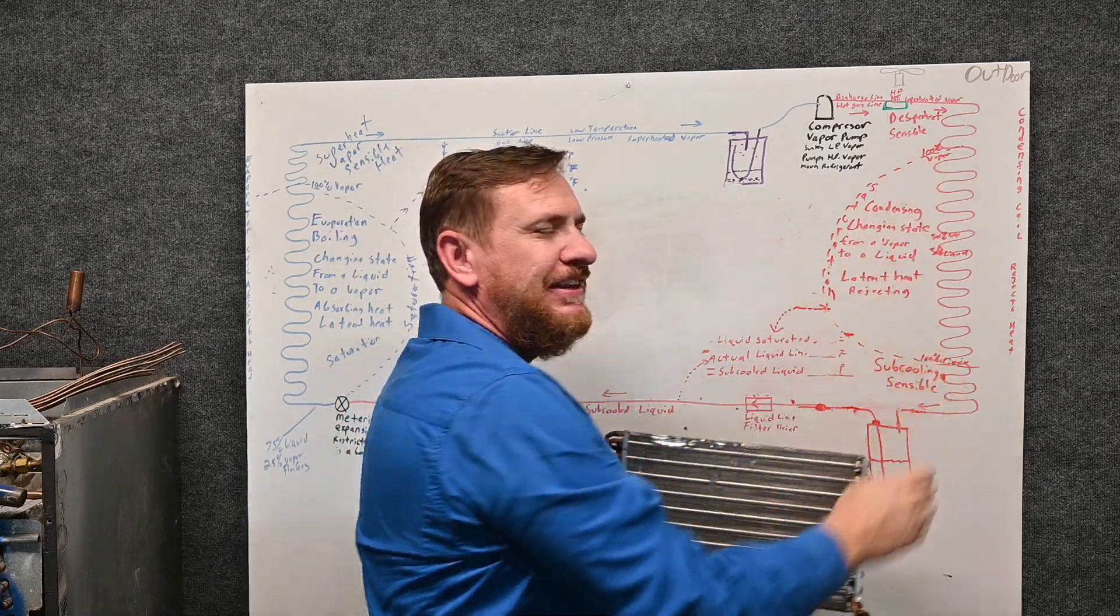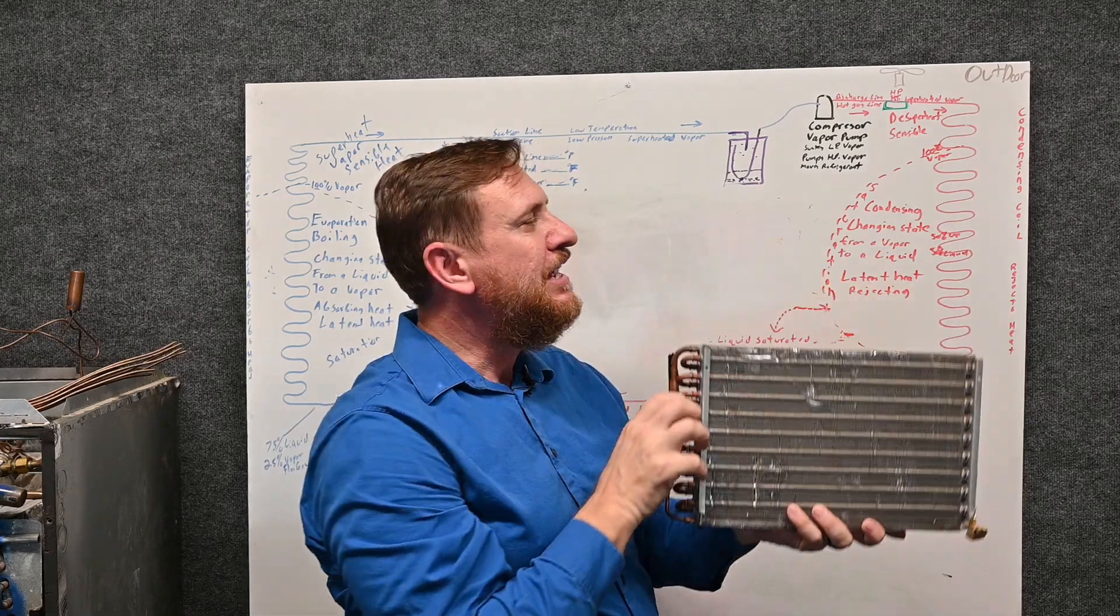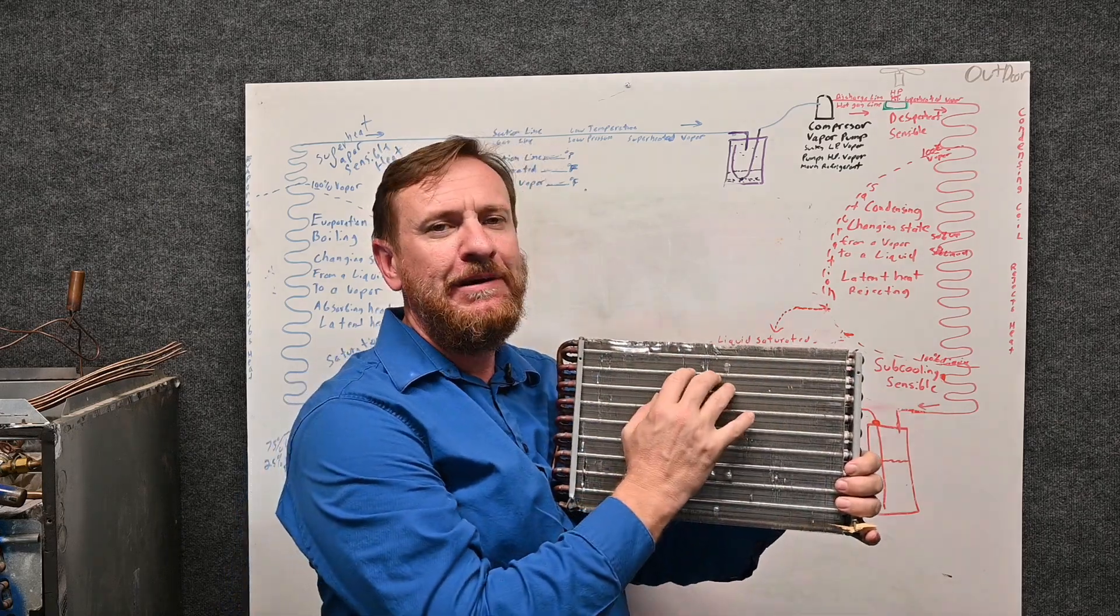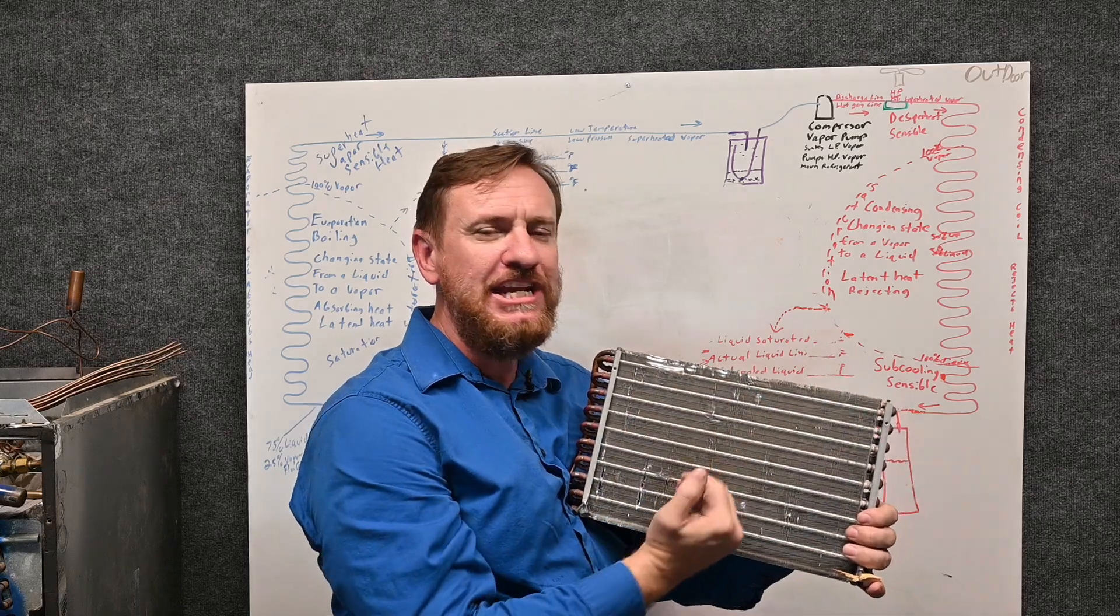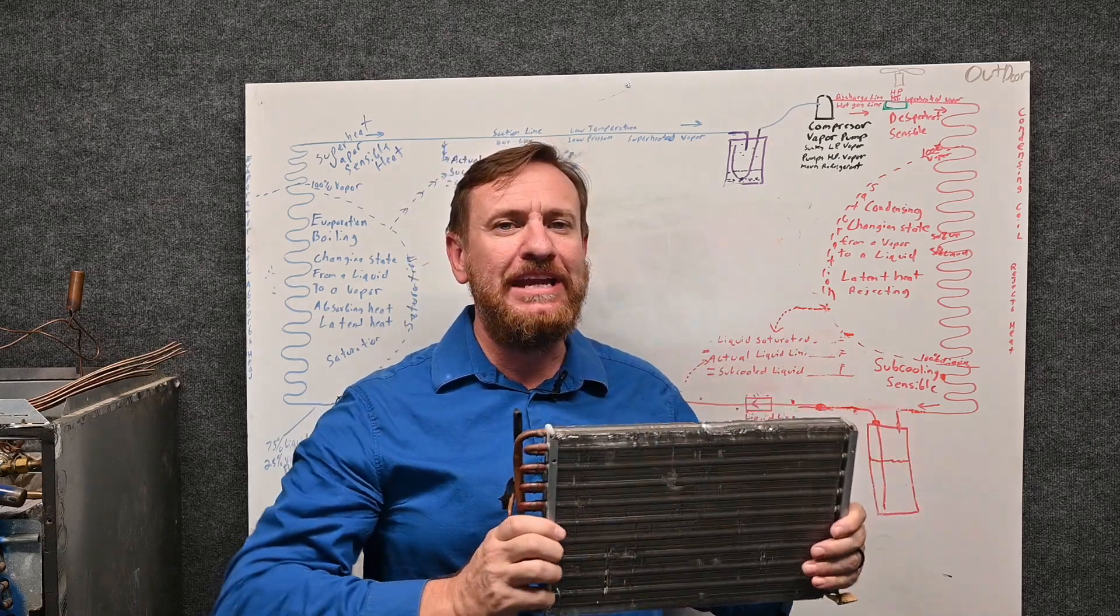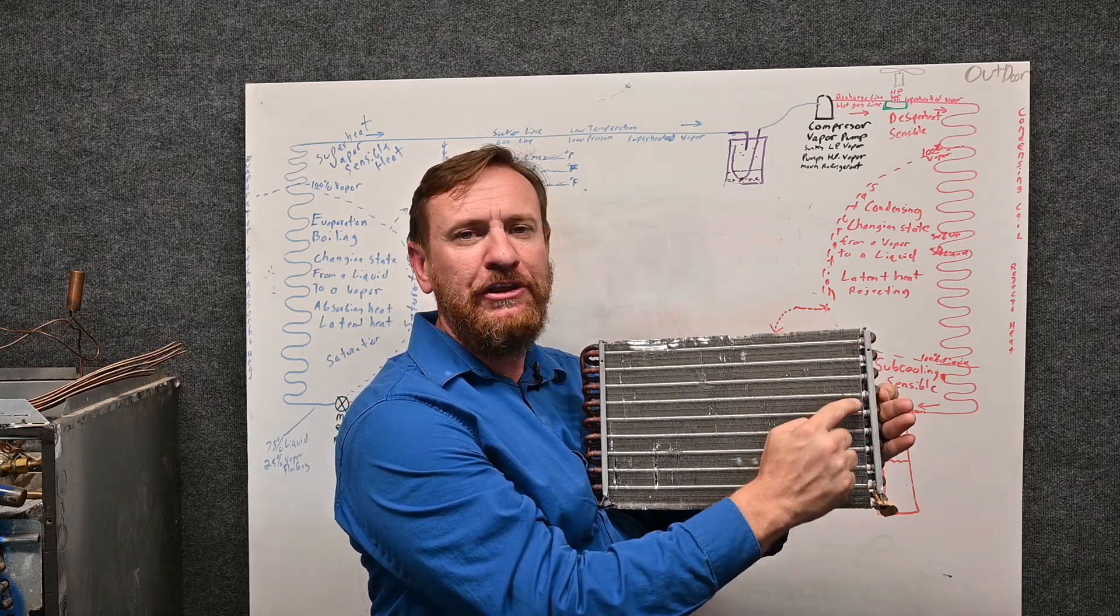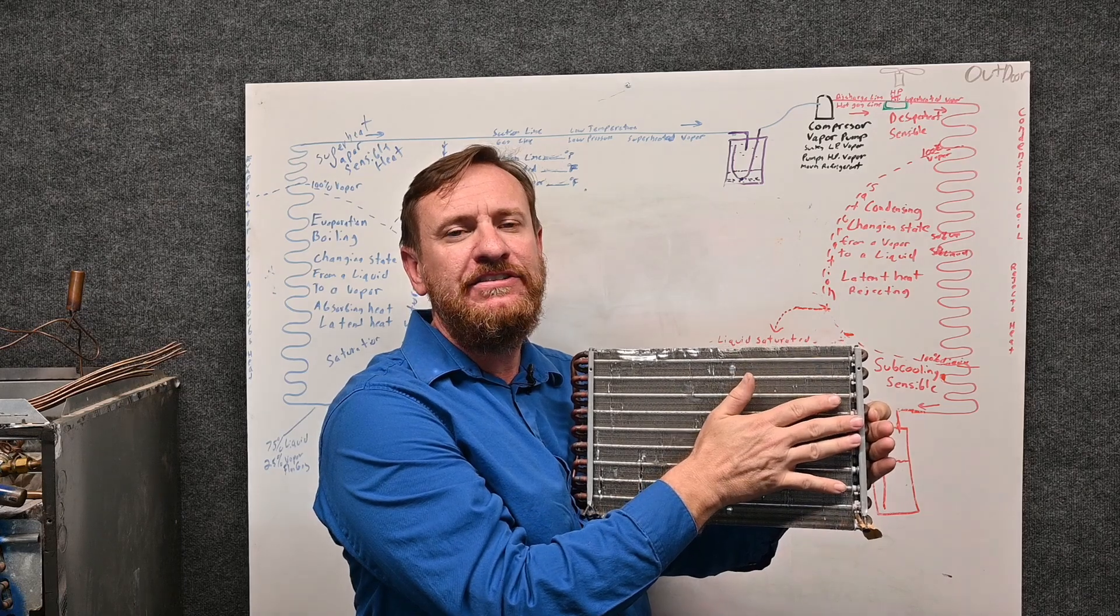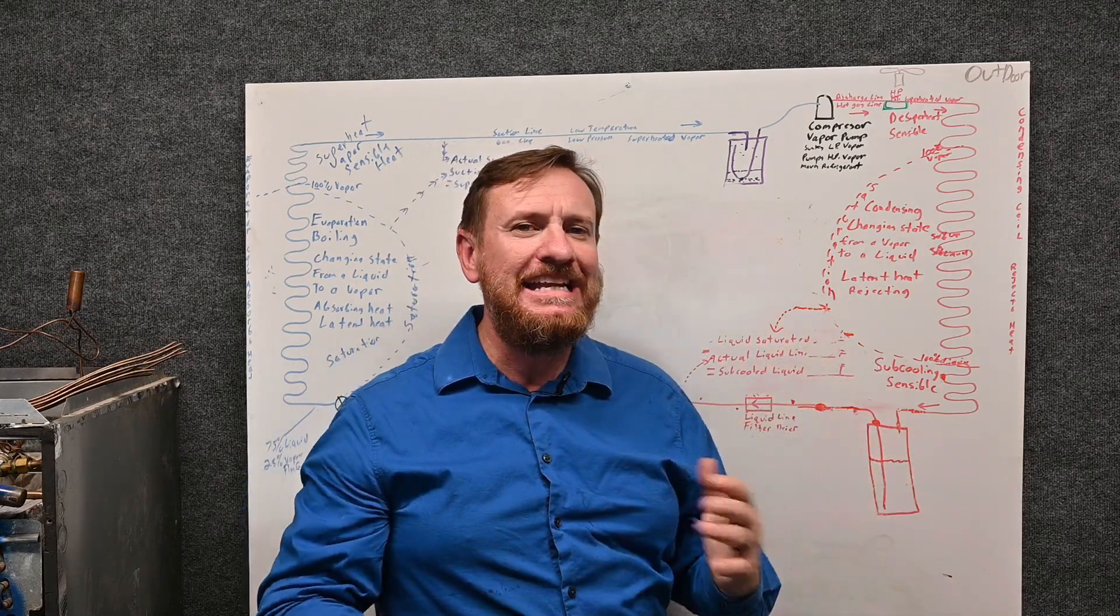Now, the middle of this—this is key. The middle section of this condensing coil is where we're changing state. We're condensing the refrigerant, changing state from a vapor to a liquid, and it's rejecting tons of latent heat. That's change of state, that's the hidden heat—we can't measure it. The temperature here and here, or all the way through, is going to be about the same temperature because it's a change of state without a change of temperature. Tons of latent heat. Remember that latent heat is so important.